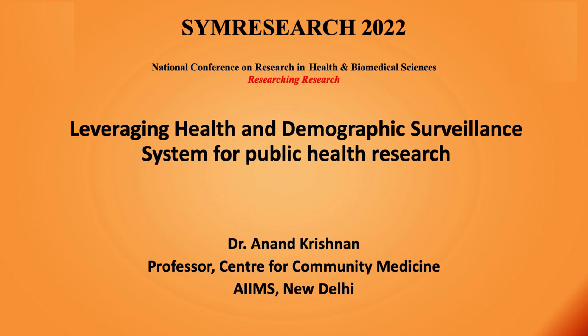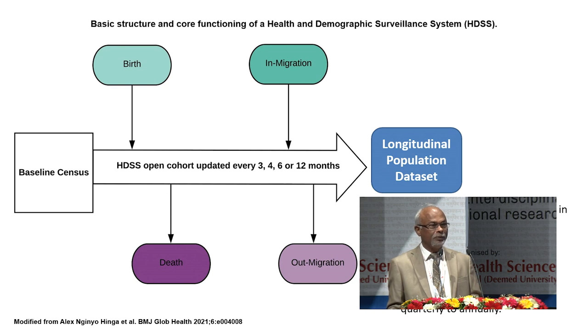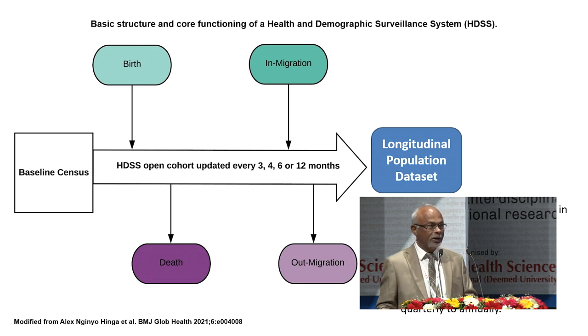The theme of this session is on health and demographic surveillance sites. Health and demographic surveillance sites usually take up a geographically well-distributed population, somewhere around 50,000 to 1 lakh — it can be bigger or smaller, but usually in that range. The problem with many demographic sources of information in India like census or SRS is that they occur very infrequently and are not of the quality we might often require.